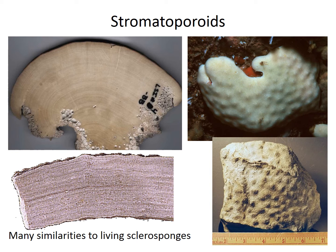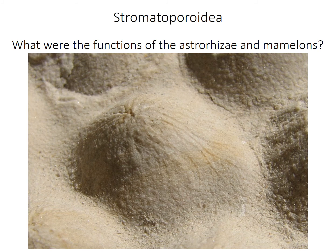Next we'll consider suspension feeding in another group of sponges, the stromatoporoids — an extinct group shown in the bottom photos, which have many similarities in overall morphology to modern sponges called sclerosponges, shown in the top photos. One similarity is that they often have a surface covered with little bumps called mamelons. Zooming in on a mamelon, they typically have radiating canals called astrorhizae, which converge toward the top, and sometimes there is a small depression at the top. The question is: why does the organism's surface have these mamelon bumps, and what was the function of the astrorhizae?